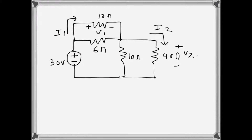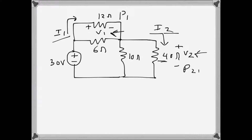I want to find the currents I1 and I2 in this circuit, the voltages V1 and V2, and the power dissipated through these resistances, which are P1 and P2. In order to do that, I will use the equivalent resistance method and current divider method to find the currents.